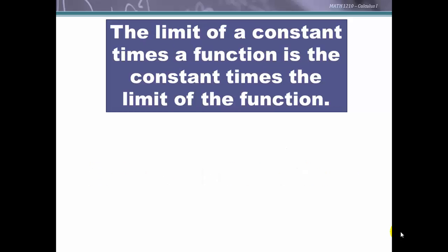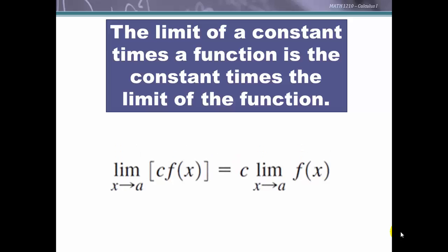The limit of a constant times a function is the constant times the limit of the function. If we have a constant c, we can multiply it to the function first and then find the limit as x approaches a, or find the limit first and then multiply by the constant afterward.